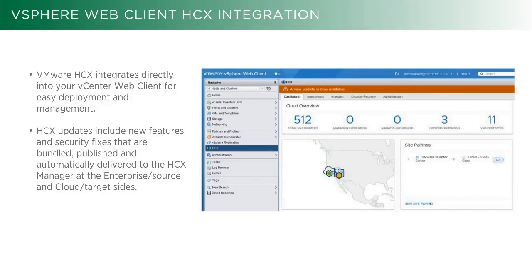One of the other nice features of the HCX product is that it integrates directly with the vSphere web client. There's not a separate pane of glass you have to go to to manage, maintain, or do all these migration activities, or even do the implementation. Once you have the initial OVA manager stood up, you register that with your vCenter, then register that with the manager on the SDDC side. From that point on, everything else is deployed through the web client. The updates, all the interconnect, all the migrations, all the DR, and administration — everything is done right through the web client.